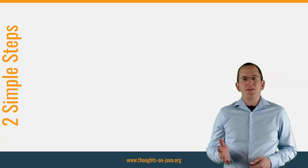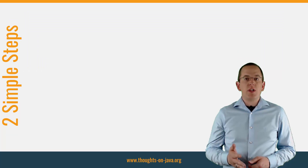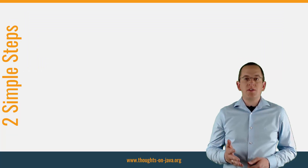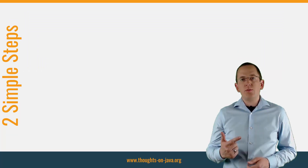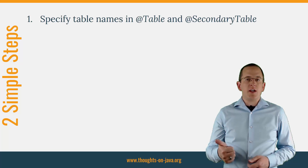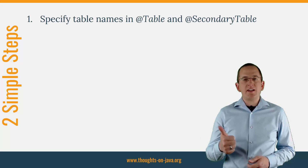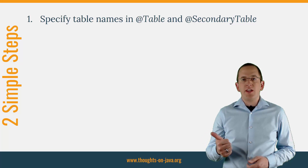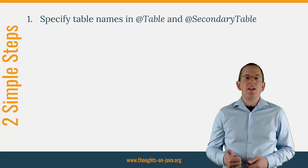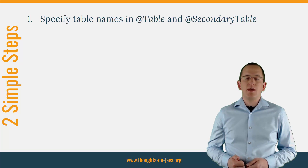Yes, you can map an entity to 2 database tables in 2 simple steps. First, you need to annotate your entity with JPA's @Table and @SecondaryTable annotations and provide the names of the first and second table as the value of the name parameters.